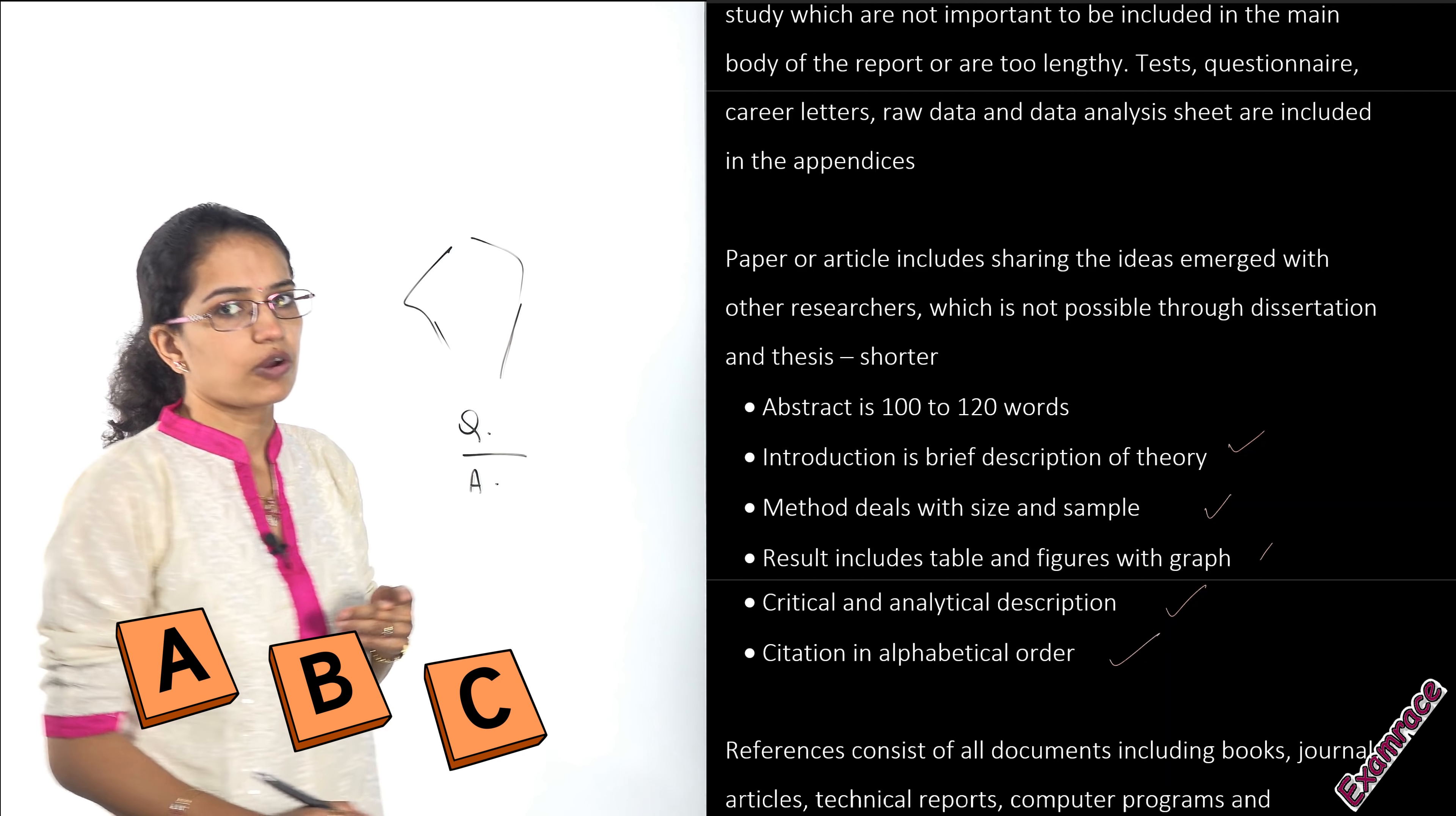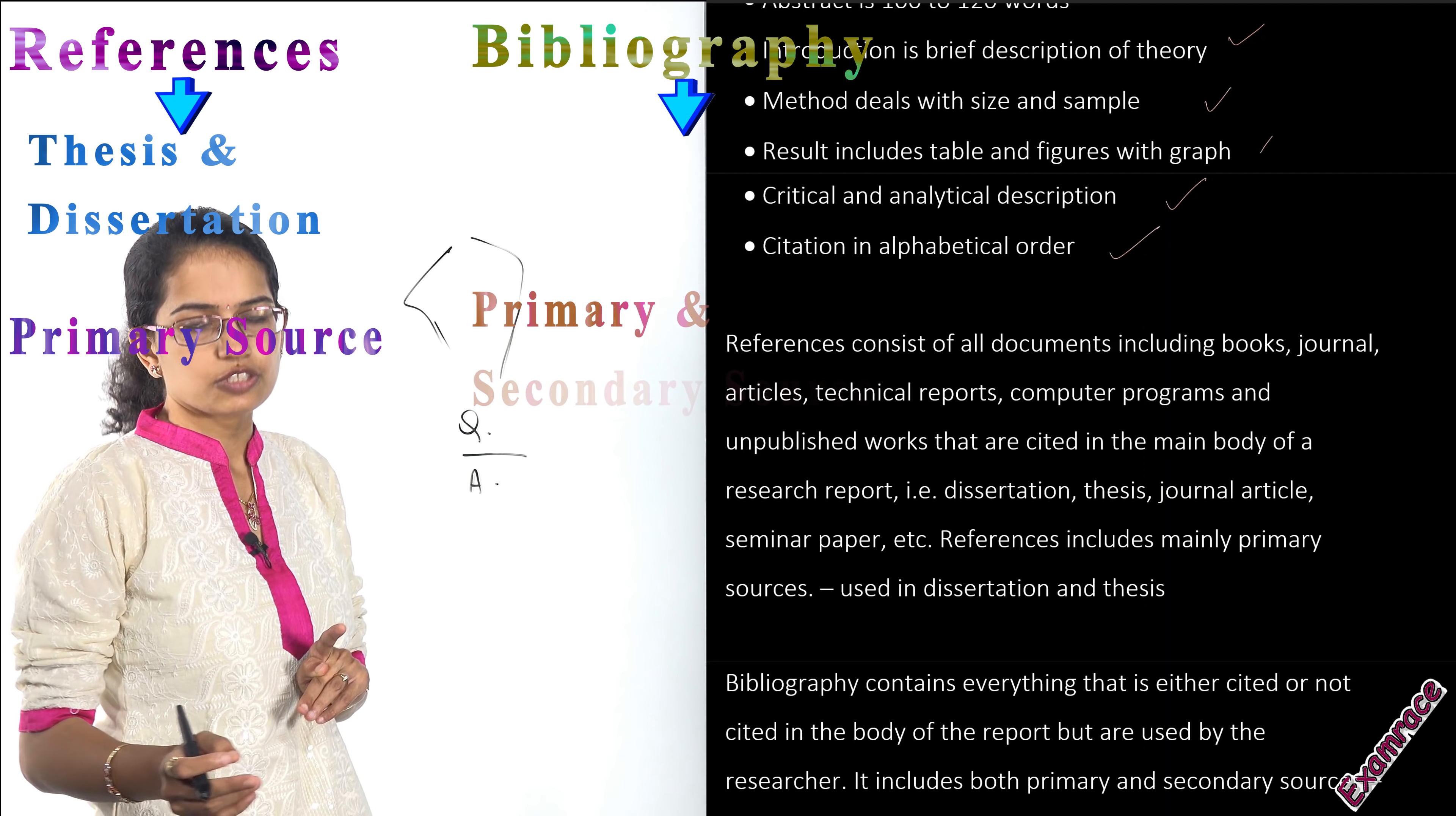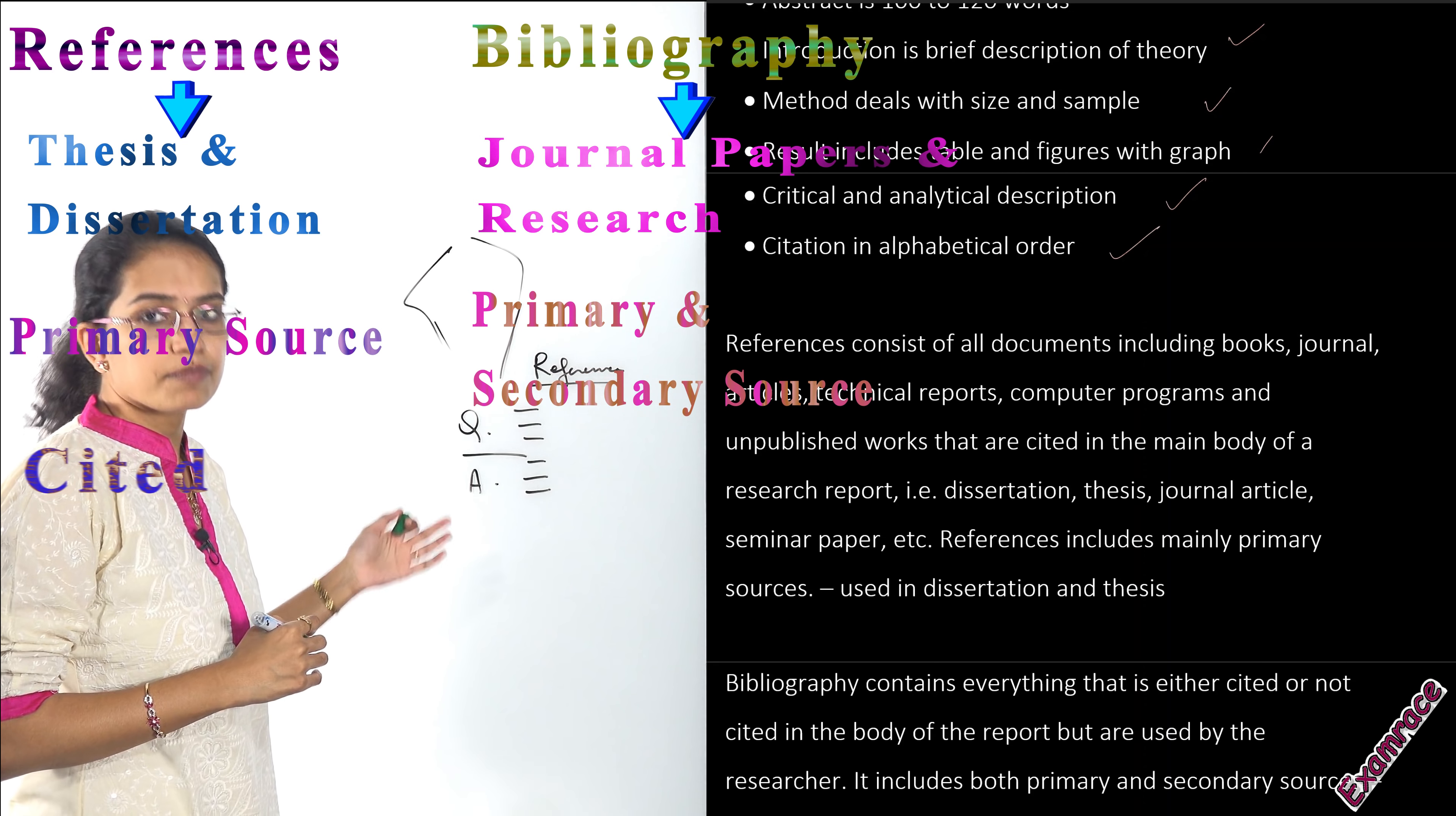This citation is very important. You have two terms: references and bibliography. References is mainly used for thesis and dissertation and is based on primary sources. However, bibliography is based on primary as well as secondary sources, mainly used for journal papers and research. The basic difference is that under references you would list all the papers that you have referred and that have helped you in the research.